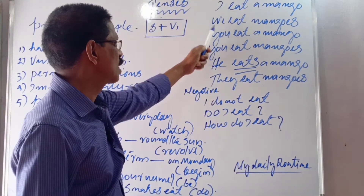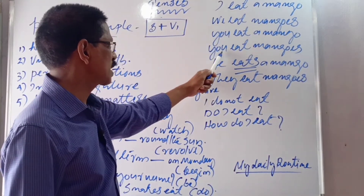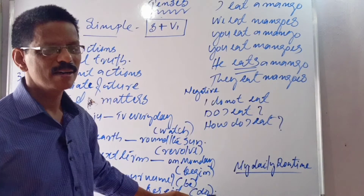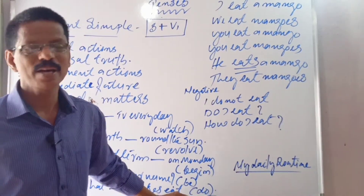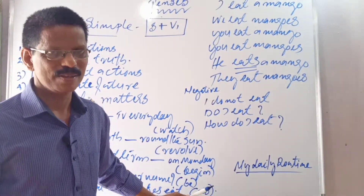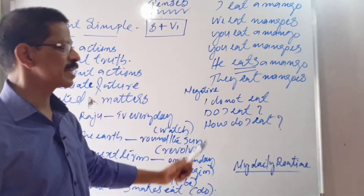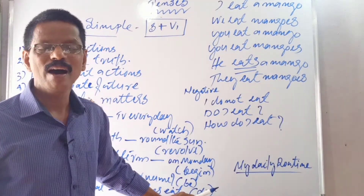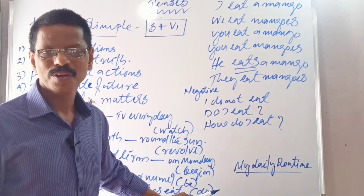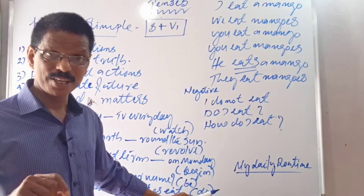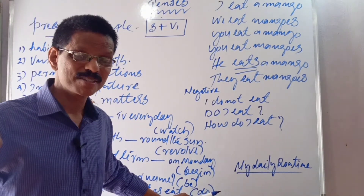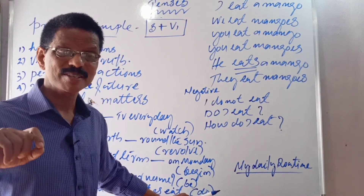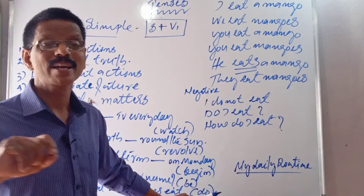I — first person. You — second person. He, she, it, and they — third persons. I write a letter, we write letters, you write a letter, you write letters, he writes a letter, and they write letters.